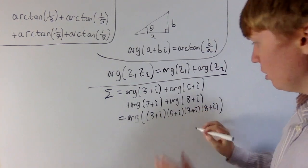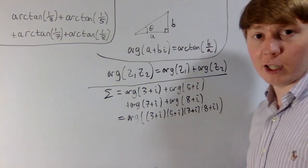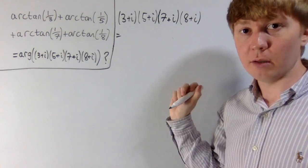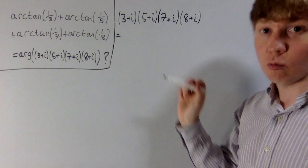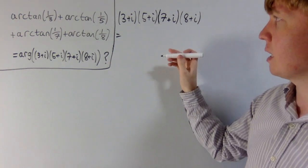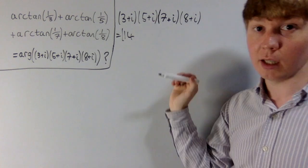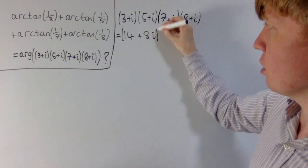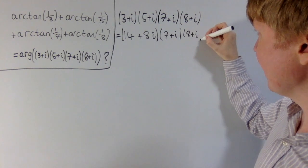We'll now actually do this multiplication of all these complex numbers. Starting with (three plus i) times (five plus i): the real part is three times five is fifteen, minus one from i times i, giving fourteen. The imaginary part is five plus three, giving plus eight i. So (three plus i)(five plus i) equals fourteen plus eight i. Now we need to multiply this by seven plus i, and then finally by eight plus i.